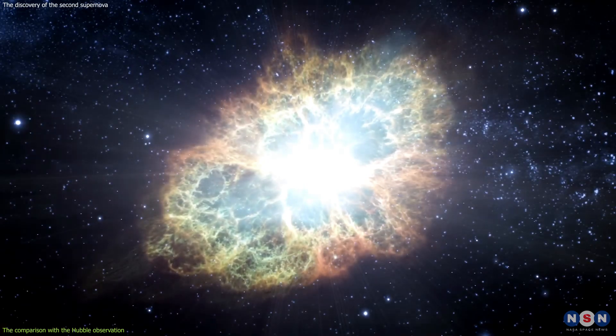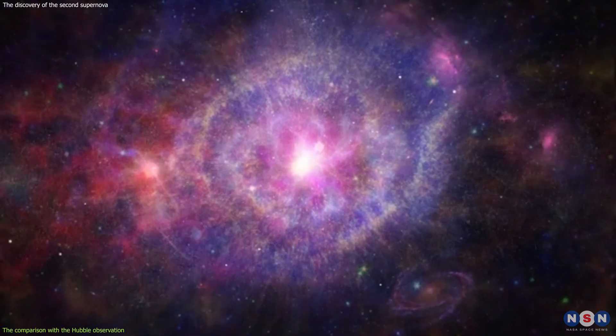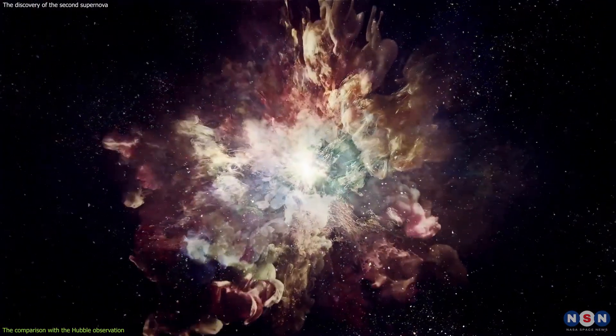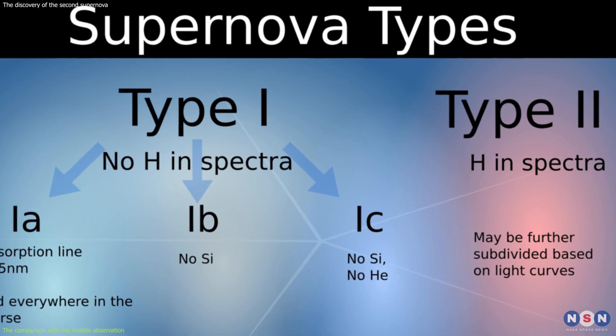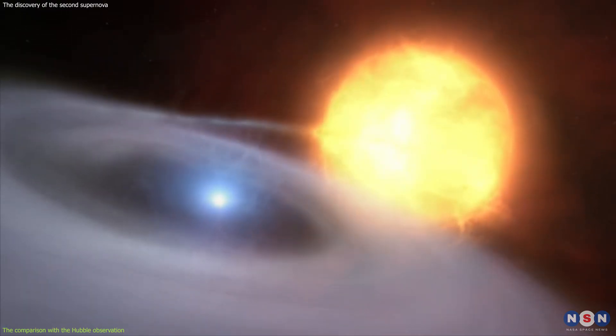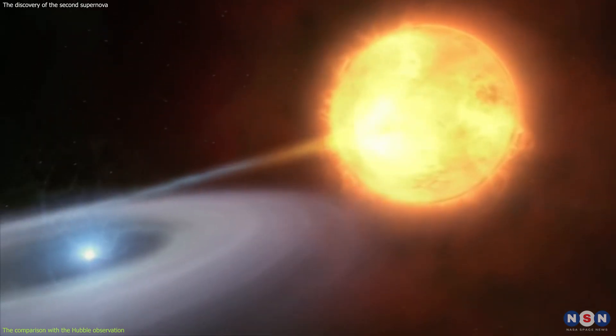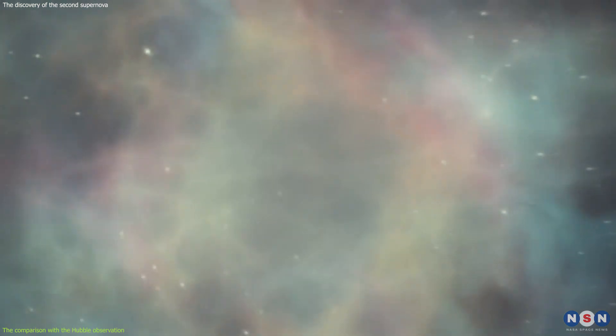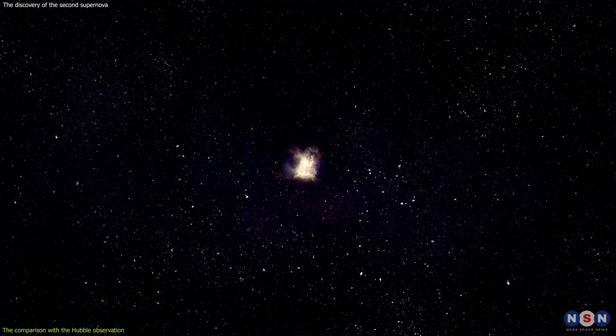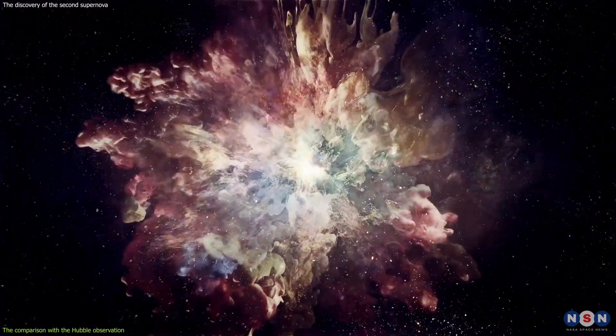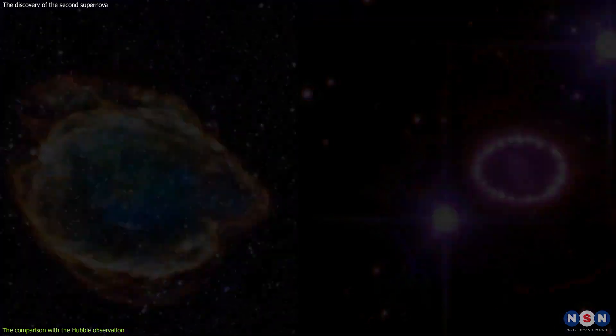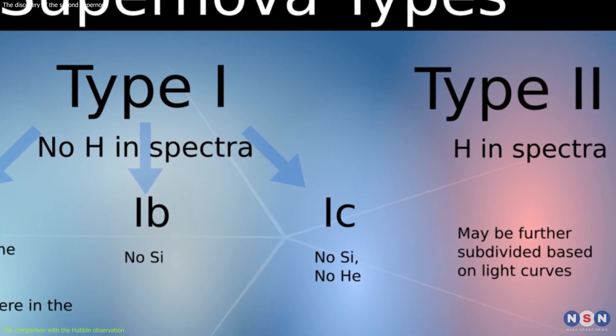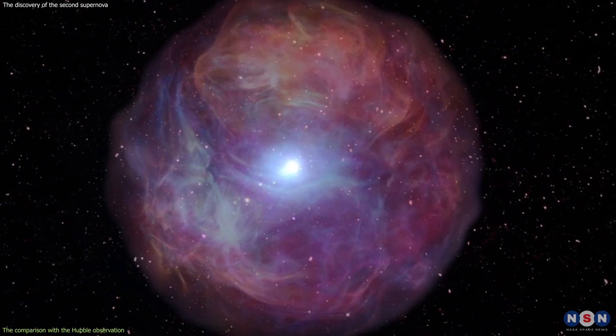Also, the color and the spectra of the supernovae can tell us what kind of supernovae they are, and what elements they produce, and they depend on the temperature and the chemical composition of the supernovae, which are determined by the type and the stage of the explosion. There are two main types of supernovae, type 1 and type 2. Type 1 supernovae occur when a white dwarf, which is the remnant of a low-mass star, accretes matter from a companion star, or merges with another white dwarf, and reaches a critical mass that triggers a thermonuclear explosion. Type 2 supernovae occur when a massive star runs out of fuel and collapses under its own gravity, creating a shockwave that blows up the outer layers of the star. Type 1 supernovae are usually brighter and whiter than type 2 supernovae, and they have different spectral features, such as the presence or absence of hydrogen lines.